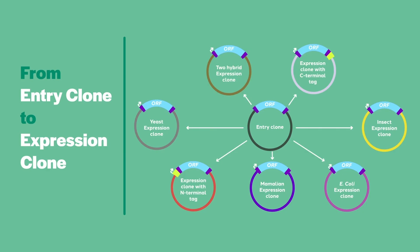Once you have your entry clone or clones, you need to create your expression clones. You will choose the appropriate destination vector. Destination vectors are engineered to accommodate everything from mammalian expression to two-hybrid screening. The identical LR reaction is used no matter which expression clone you are building. Gateway technology also allows you to combine multiple entry clones into a single expression vector in one step.